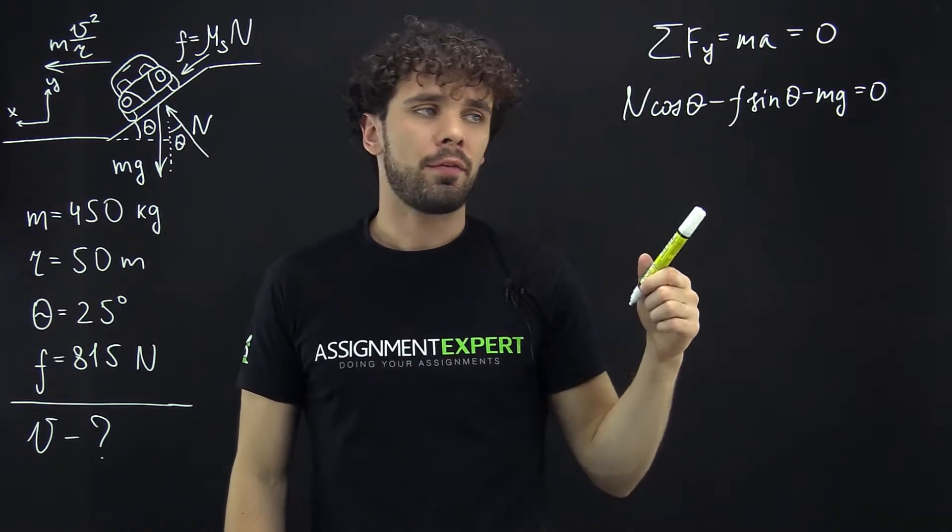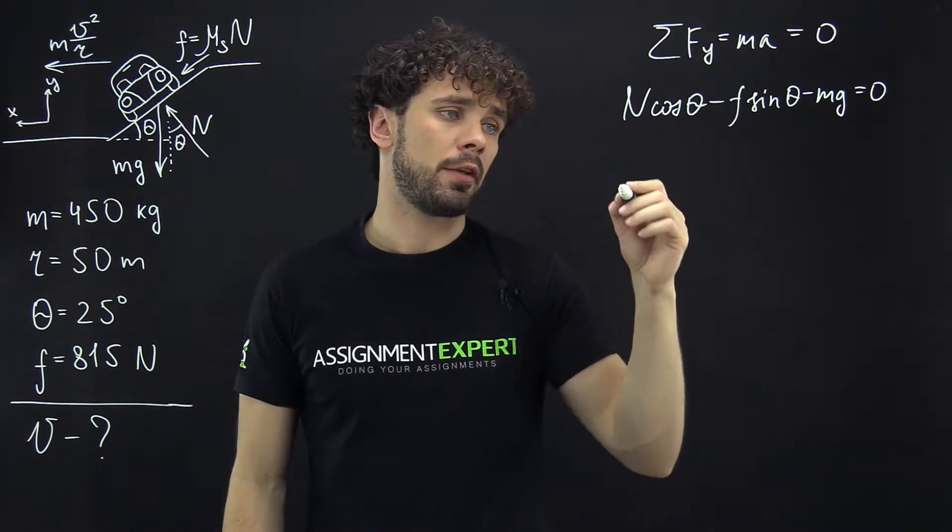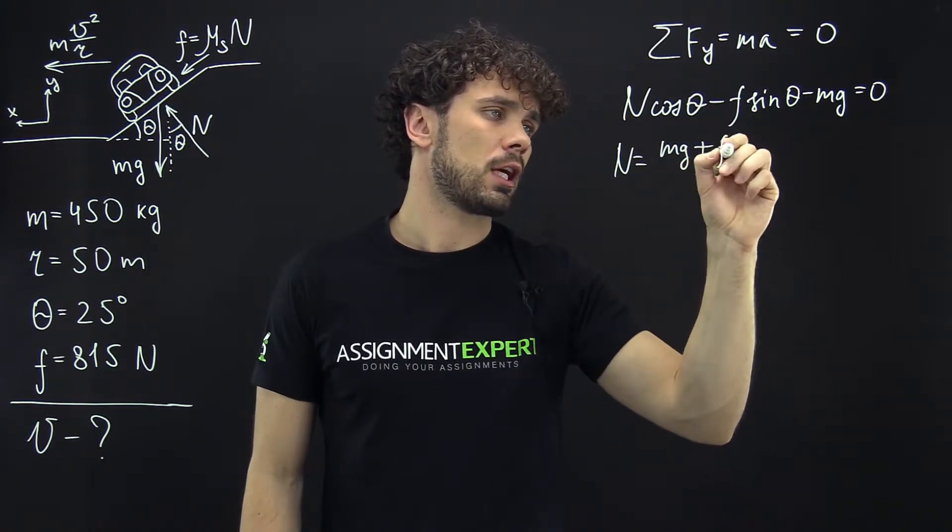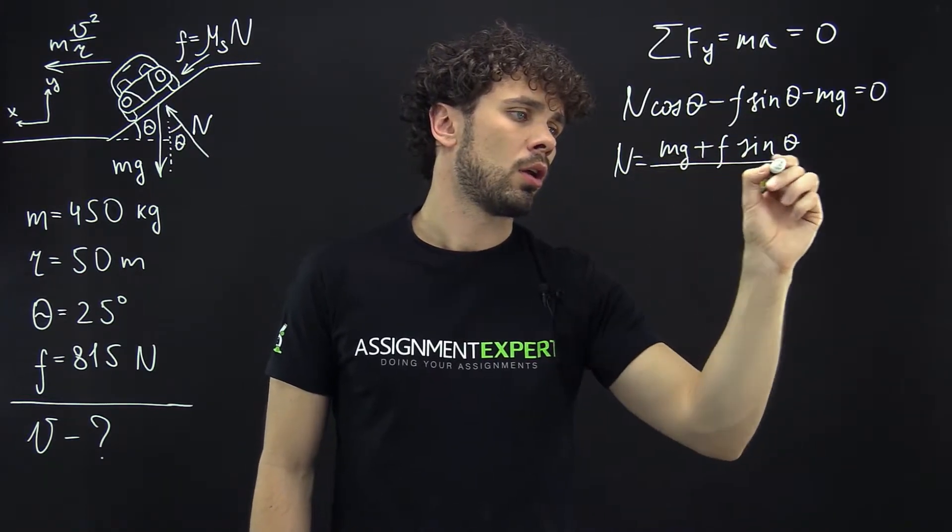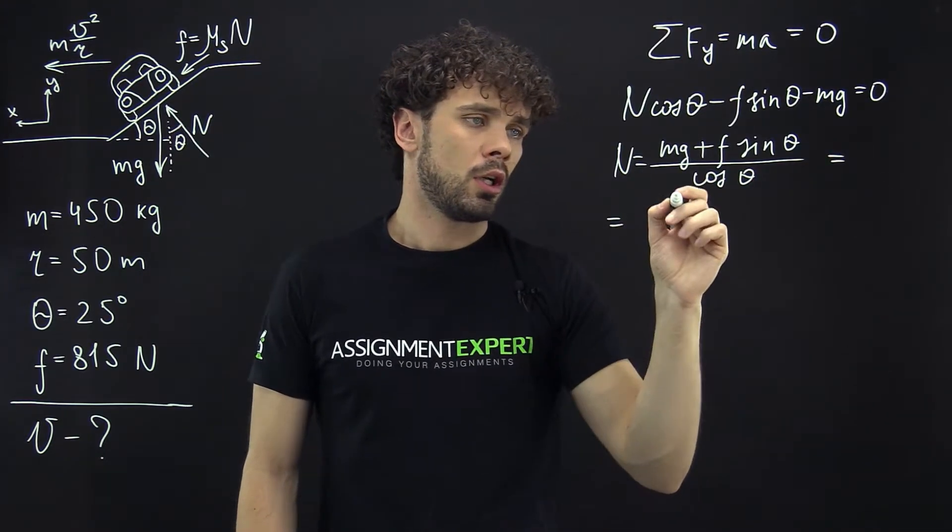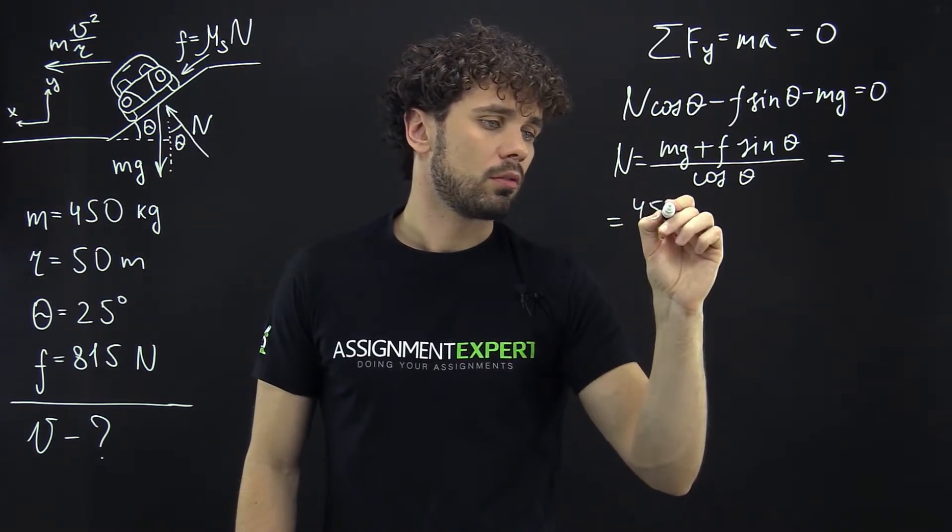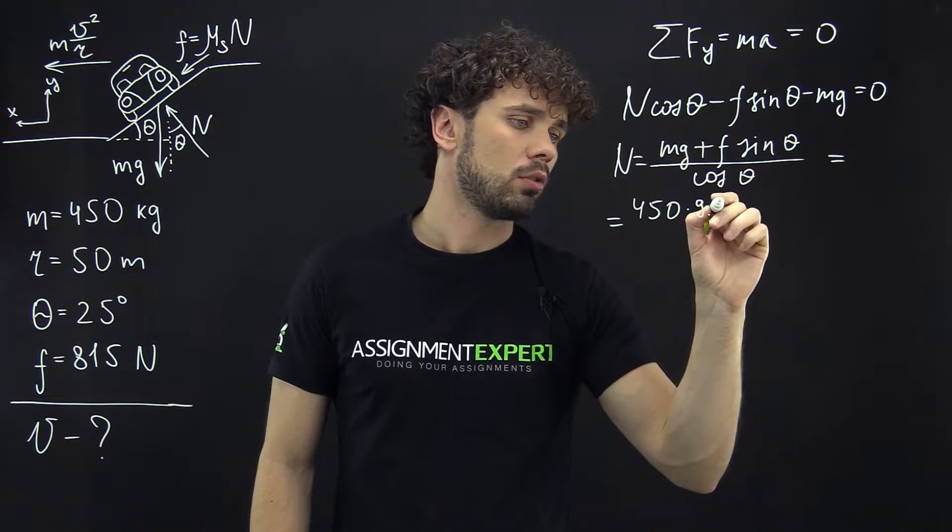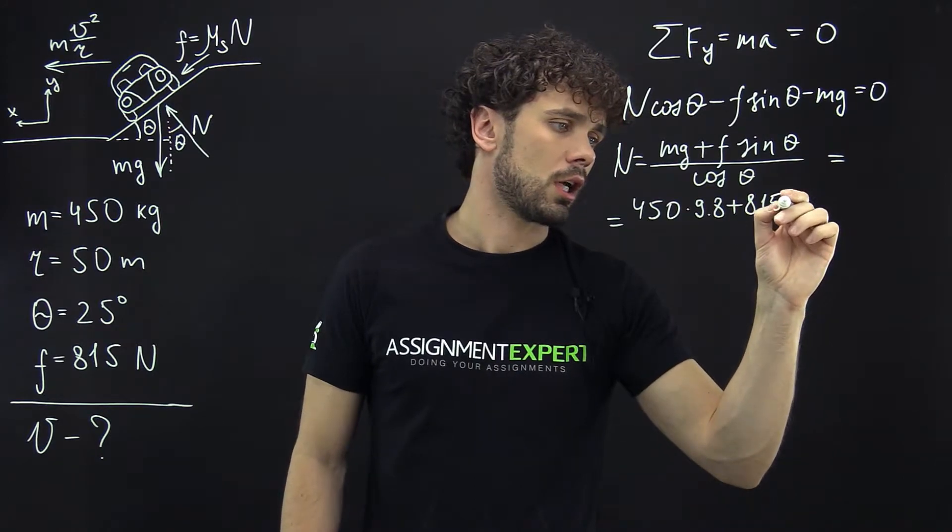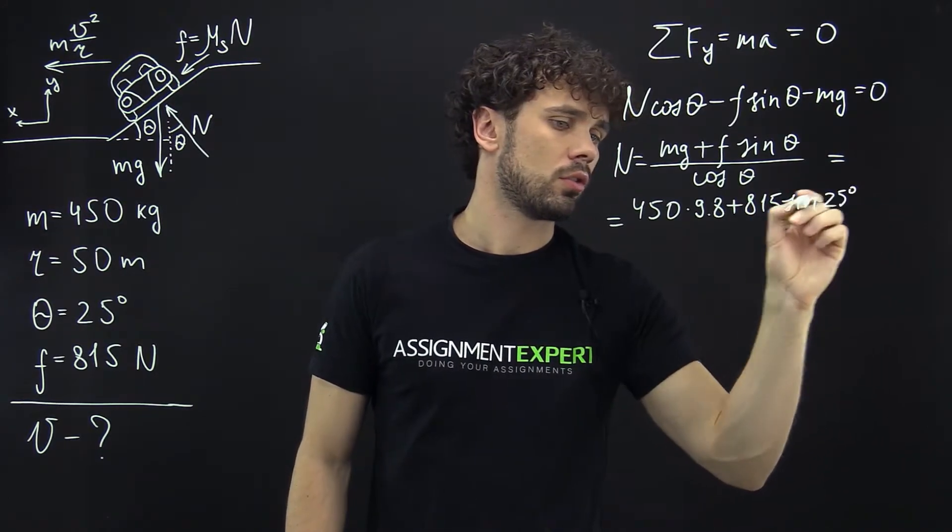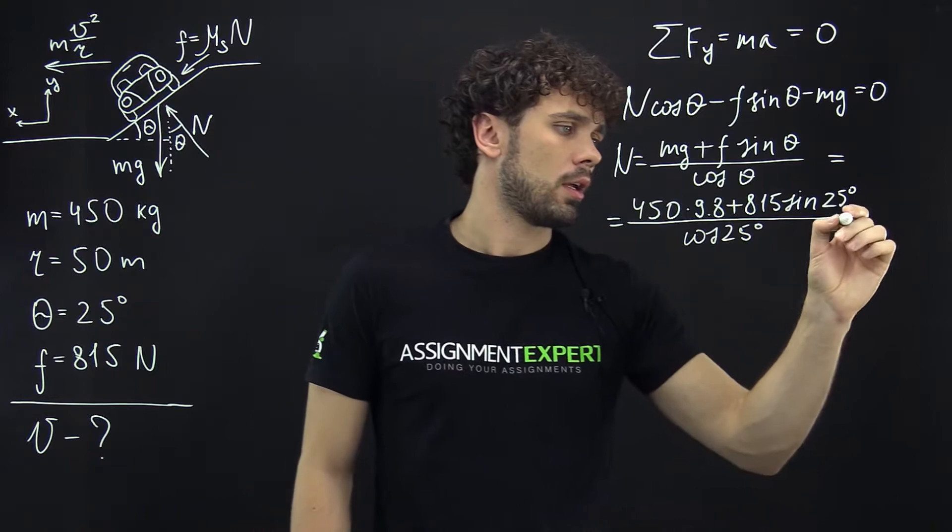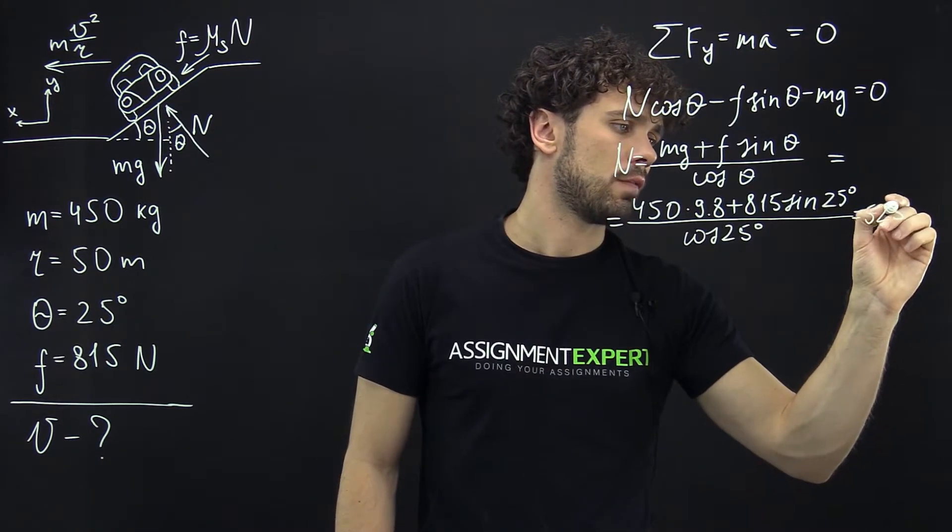Here we know everything except the reaction force N, so let's find it. N equals (mg + F sin θ)/cos θ. This gives us (450 × 9.8 + 815 × sin 25°)/(cos 25°), which equals 5251 newtons.